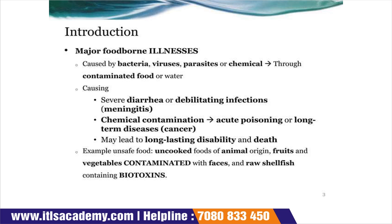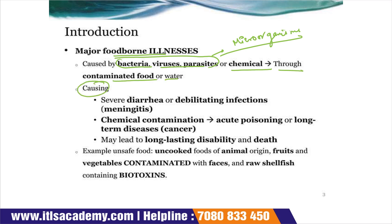Major foodborne illnesses are caused by microorganisms — bacteria, viruses, and parasites — or by chemicals through contaminated food or water. Effects in humans include severe diarrhea or debilitating infections like meningitis. Chemical contamination can cause acute poisoning or long-term diseases like cancer, long-lasting disability, and death. Examples of unsafe food include uncooked food of animal origin.